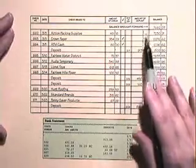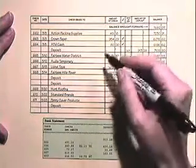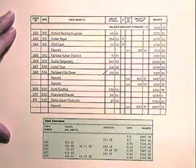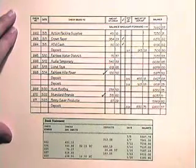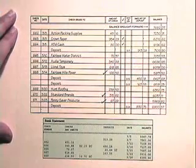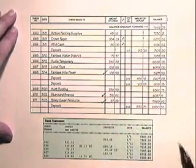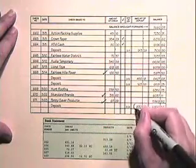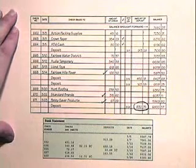Now we are going to reconcile our checking account. Here we have our check register and our bank statement. Looking in our check register, we can see a check for $100.50 that is not included in our bank statement, a check for $315.62 that is not included in our bank statement, and a check for $67.29 that is not included in our bank statement. We need to write those down.